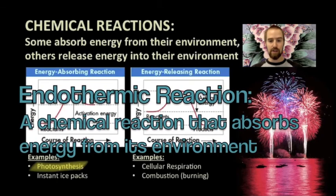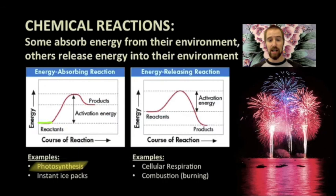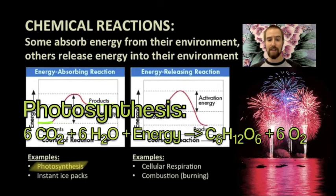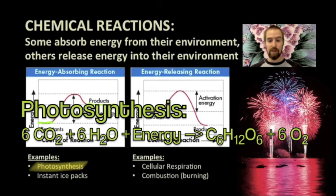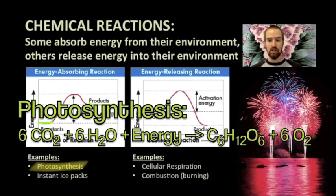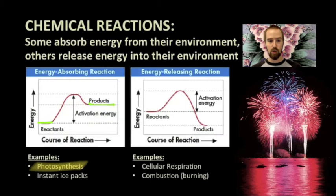The reactants of photosynthesis — carbon dioxide and water molecules — have very little energy of their own, but the products of photosynthesis — simple carbohydrates and oxygen gas — contain a lot of energy. This energy came from the sun, and plants are essentially packaging the sun's energy into these molecules, which is why we can consume carbohydrates in order to provide ourselves with energy.